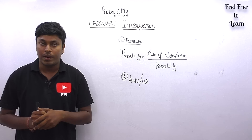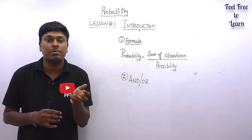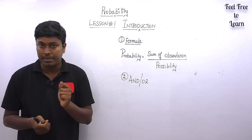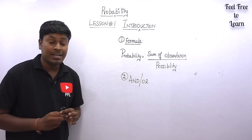Thanks for being here in my YouTube channel. In this lesson number one on the topic probability, we are going to see an overview and introduction. Before solving a question, you need to know the formula. Probability is equal to sum of observations, which is the numerator, divided by possibilities, which is the denominator.